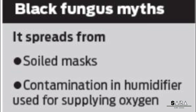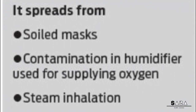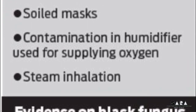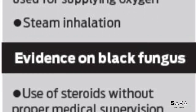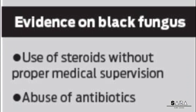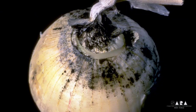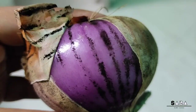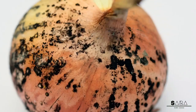Some myths about transmission of black fungus: mucormycosis cannot be transmitted from person to person, so there is no need for people to isolate. There is no evidence that face masks can harbor the fungi. Another popular theory is that the black mold sometimes seen on onions is the mucormycosis fungus, but in fact the black mold found on onion and garlic is usually the fungus Aspergillus niger.